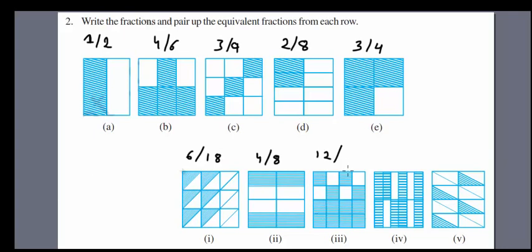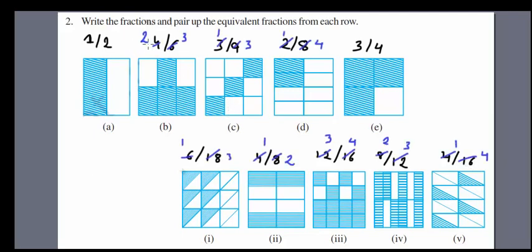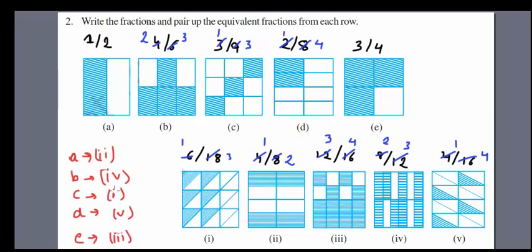Continuing question two: we have 12 over 16, 8 over 12, and 4 over 16. Reducing all to simplest form gives us 2 over 3 and 1 over 4. Now we just match them — part A goes to second (half to half), and part E goes to third (the last one). That is your answer for question two.